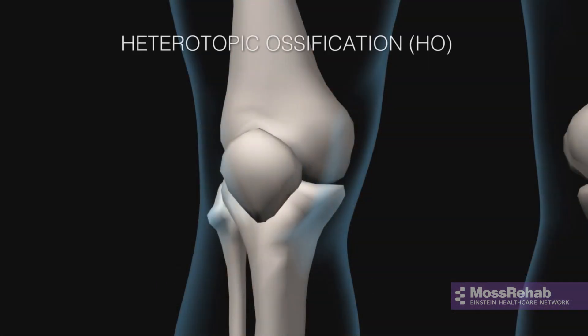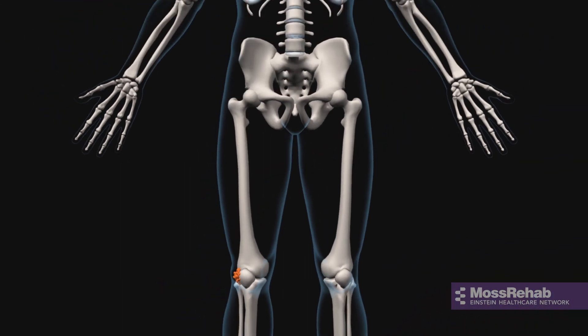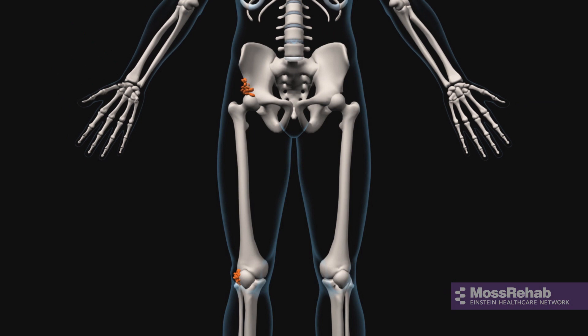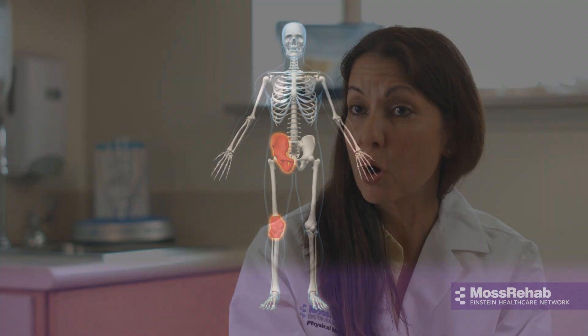Heterotopic ossification, or HO, is an abnormal bone formation that occurs in the joints below the neurological level of injury — the areas of the body that are weak. You can develop abnormal bone around those joints. Initially it might not be significant; a lot of spinal cord injuries have heterotopic ossification, but 20 percent of them can develop severe HO in which the joint becomes inflamed and they lose range of motion. If we monitor the evolution of how much bone is being deposited, and it's aggressive, we can start the patient on medication and follow through to see if surgery might be needed in the future.